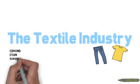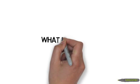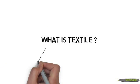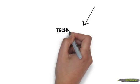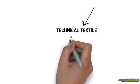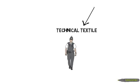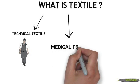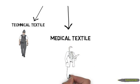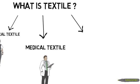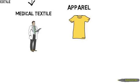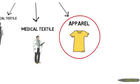Hi guys, today we will talk about the textile industry. A textile is anything made of fibers, yarn, or fabric. There are different kinds of textiles: technical textiles like bulletproof jackets, medical textiles like medical sutures, and apparels.